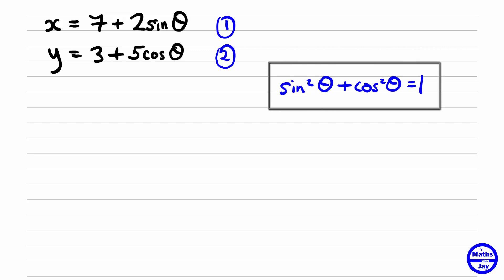So now all we need to do is make sine theta the subject of equation 1 and cos theta the subject of equation 2. So starting with equation 1, we can subtract 7 from both sides and divide by 2. So sine theta is the same as x minus 7, all divided by 2.